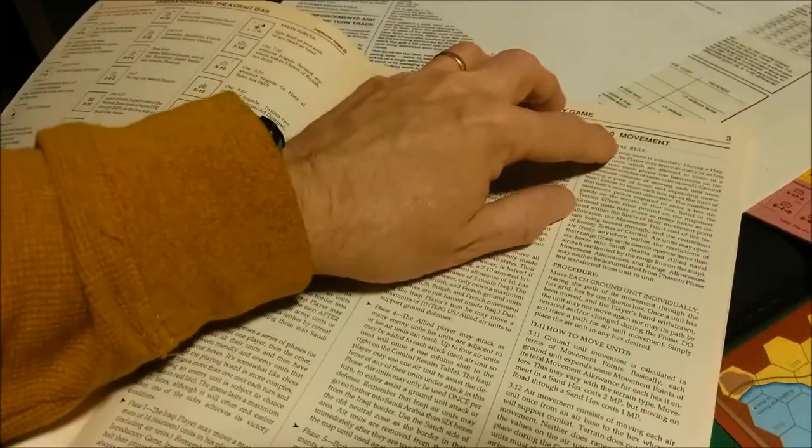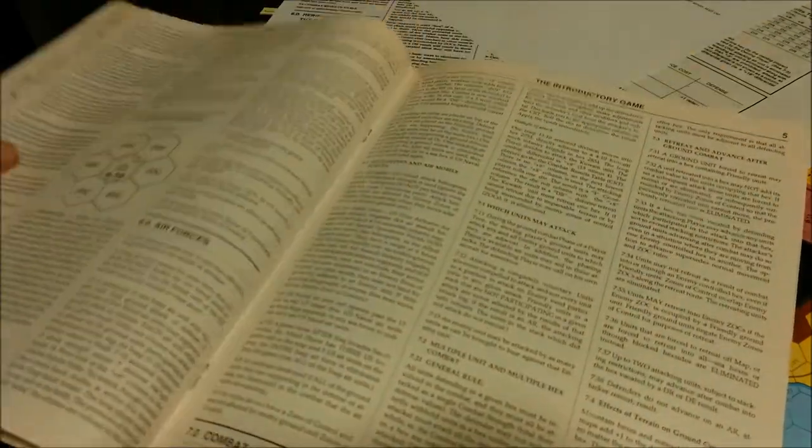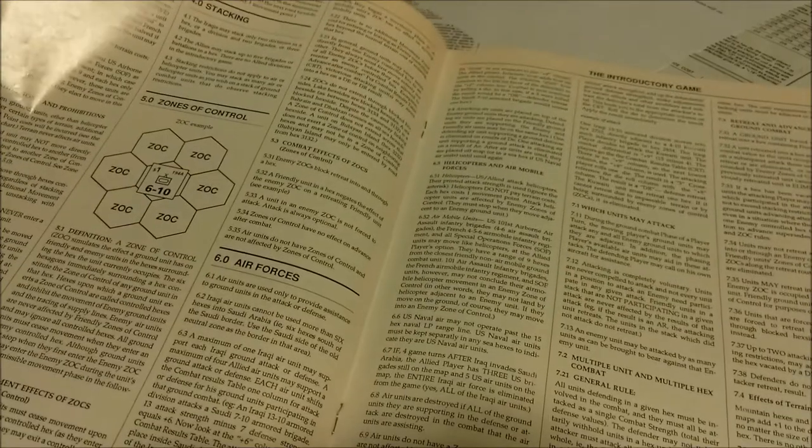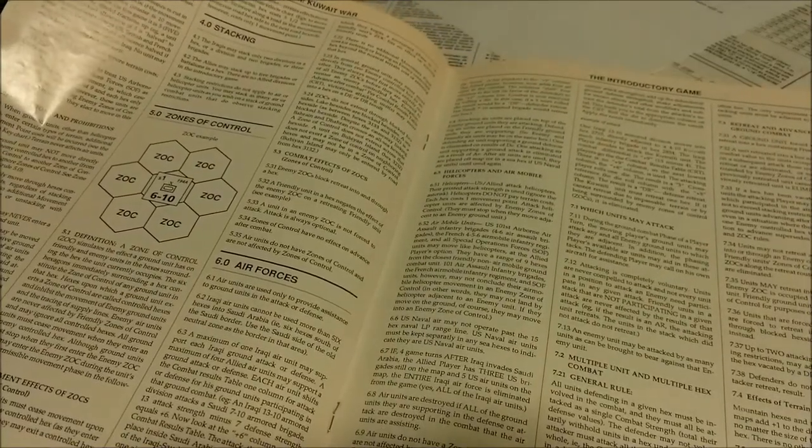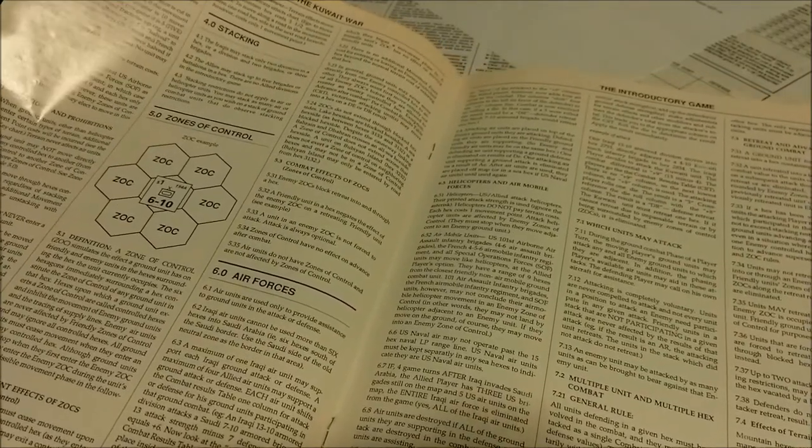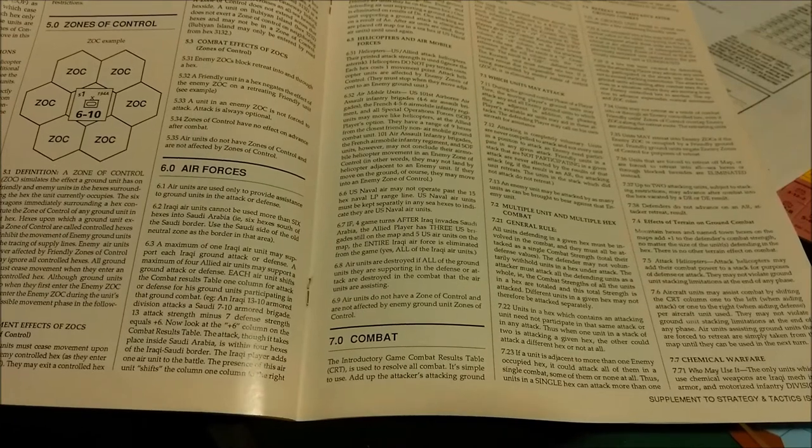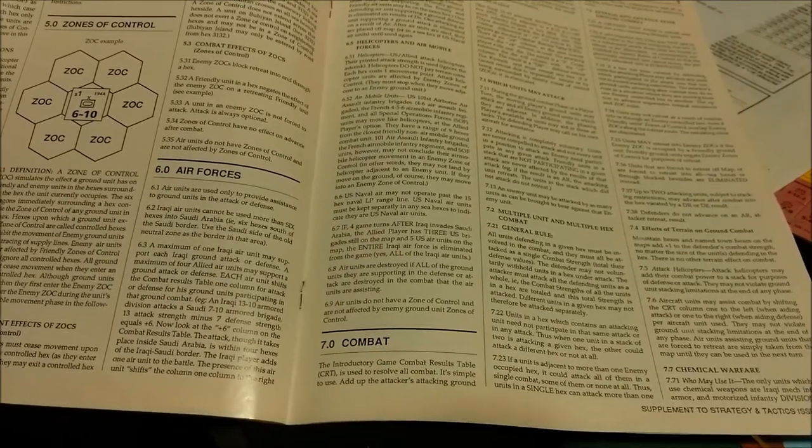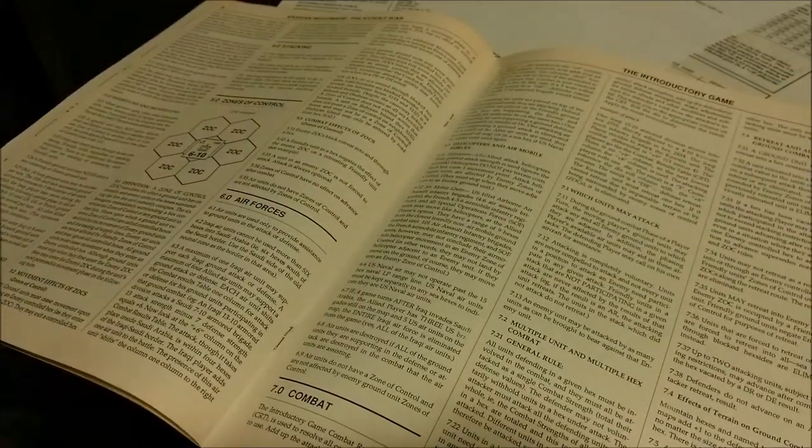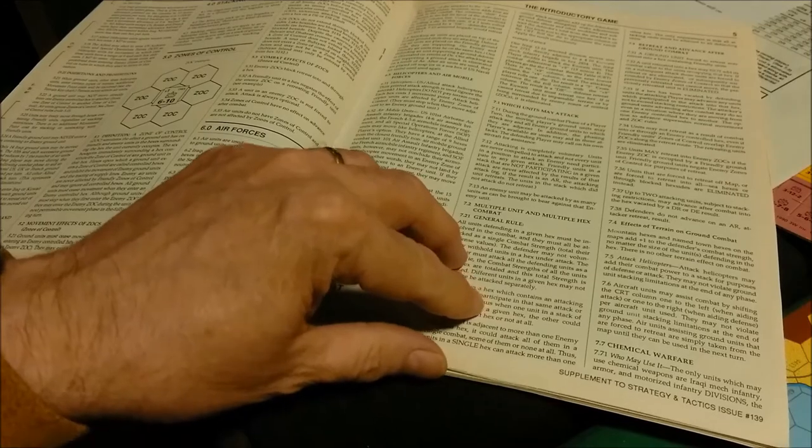Then we have movement. Tells you all about how to move ground units, basically. And then we have stacking at the top, zones of control. We have air forces, which I said are just basically air points. You can commit these air points to the attack or the defense, and they basically give you a positive or negative shift in your favor. Then we have the rules on combat, which is pretty much attack adjacent units if you want to. The attacker can attack with any or all of his units. The defender must defend with all units. That type of thing. There is a thing on chemical warfare down here at the bottom, but I'll probably just ignore that for the most part.